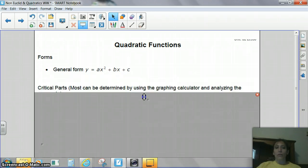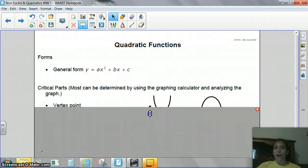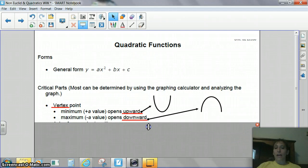All right. The critical parts. Most can be determined by using the graphing calculator and analyzing the graph. Now, if you notice, I actually put a picture of each of those up here. So, let's kind of go through this a bit. It says the vertex point. The vertex point is actually right where it's either the bottom or the top of the picture.